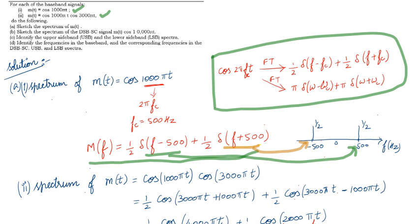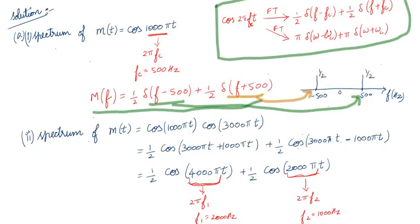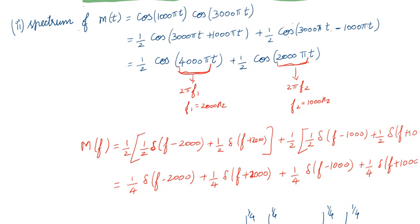That covers the spectrum of the first message signal cos(1000πt). Now we move to the second signal, m(t) = cos(1000πt) · cos(3000πt). We apply the product-to-sum identity: cos A · cos B = [cos(A+B) + cos(A−B)] / 2. So we get [cos(4000πt) + cos(2000πt)] / 2.